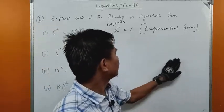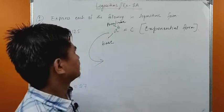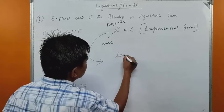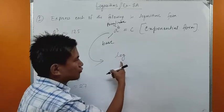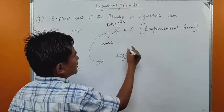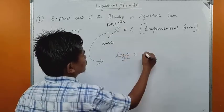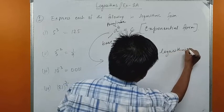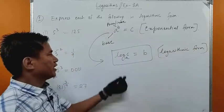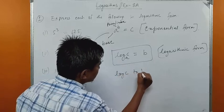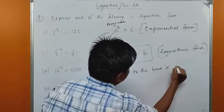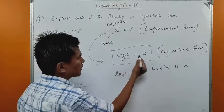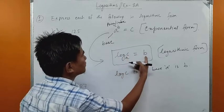Let's learn to convert the exponential form a^b = c to logarithmic form. Since a is the base, we write 'log' with a as the base, c inside, and the power b goes to the right-hand side: log base a of c equals b. We read this as: log c to the base a equals b.